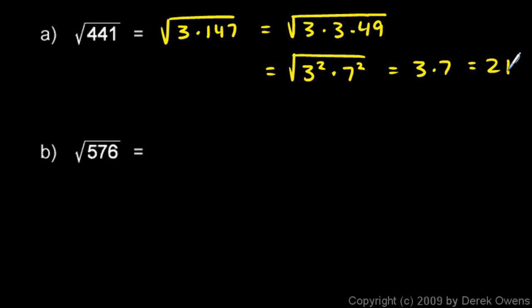Alright, let's do another. 576. Well 576 is an even number. So if we divide that by 2, we get 288. Problem can be written as the square root of 2 times 288.